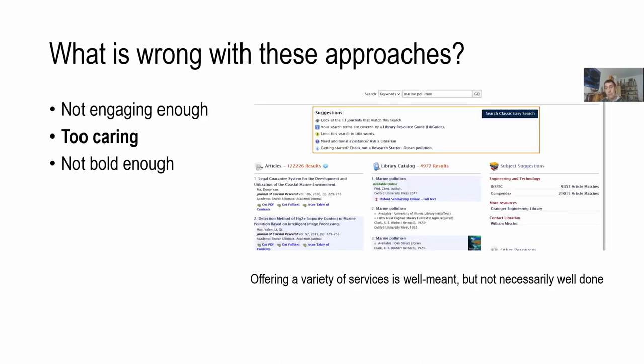What do I mean by "too caring"? The bento-style boxes again — offering a variety of services is often well meant but not really necessary. It is also a lot of text. They are obviously covering all their bases with their services, but I wonder if these bento-style boxes are actually of use to users.